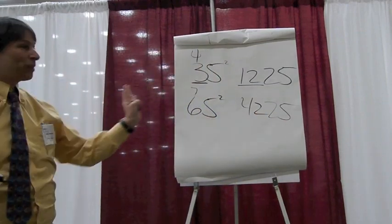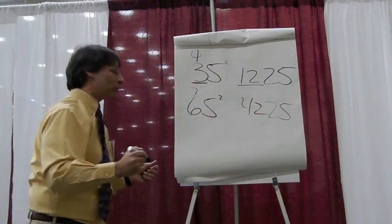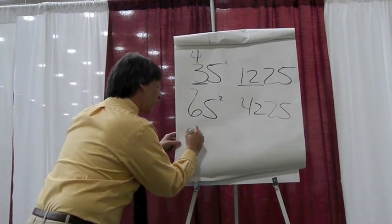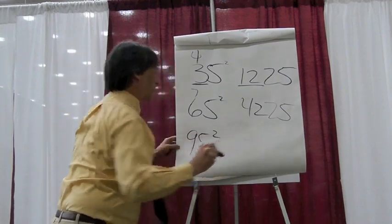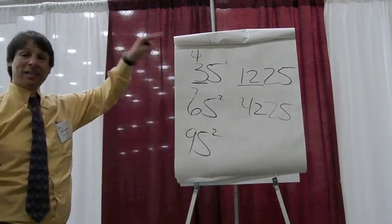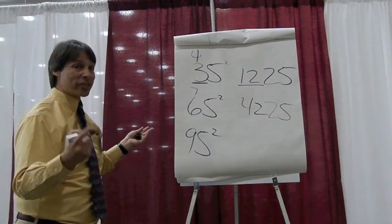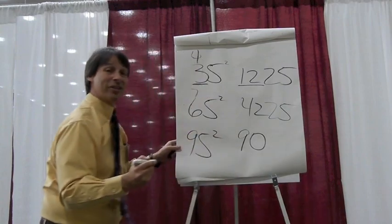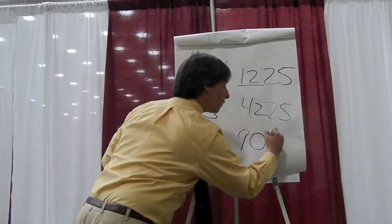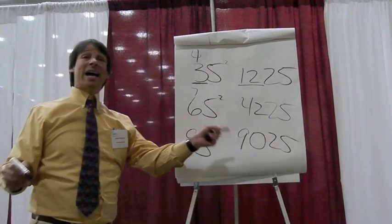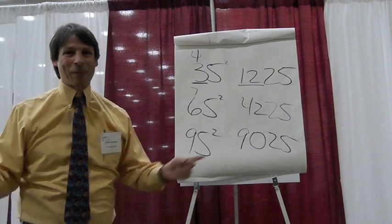This time, let's do it from left to right. Let's say the problem was 95 squared. We start by taking 9 times 10, which is 90. So your answer is 9025. How about that?